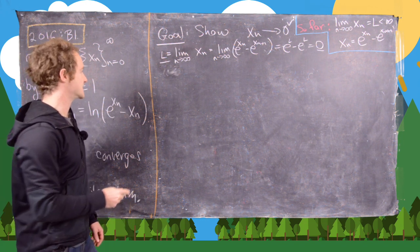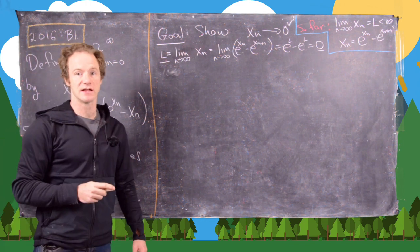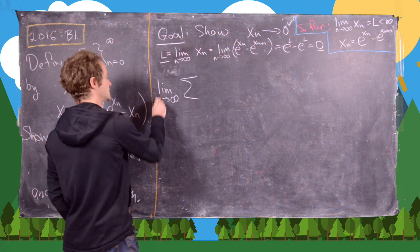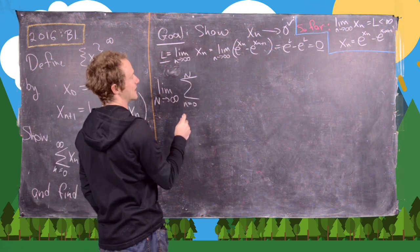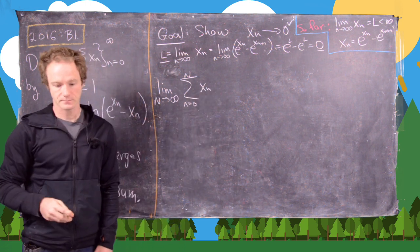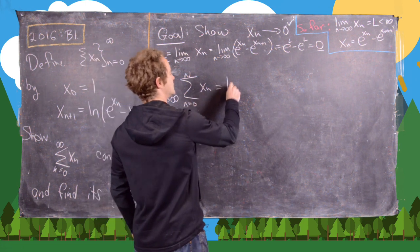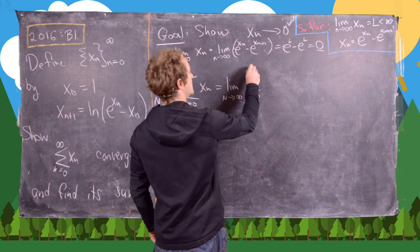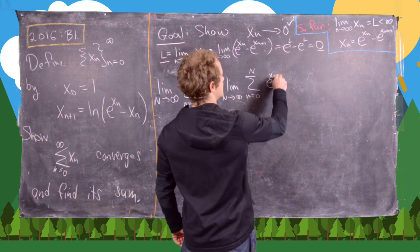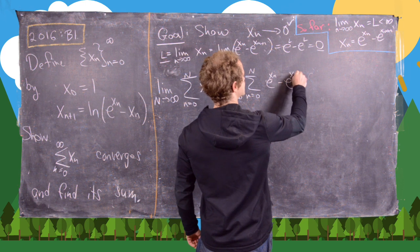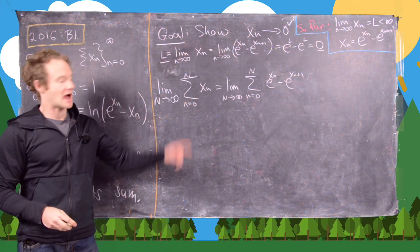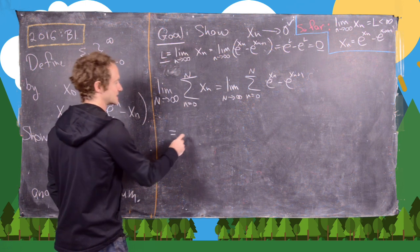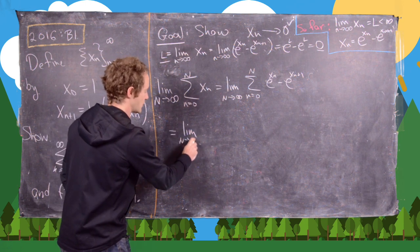Now we can go ahead and calculate this sum by taking a limit of partial sums. We take the limit as N approaches infinity of the sum from n = 0 to N of xₙ. Applying the recursion xₙ = eˣⁿ - eˣⁿ⁺¹, this becomes the limit as N → ∞ of the sum from n = 0 to N of (eˣⁿ - eˣⁿ⁺¹).